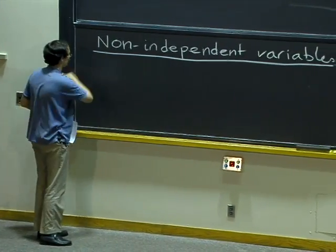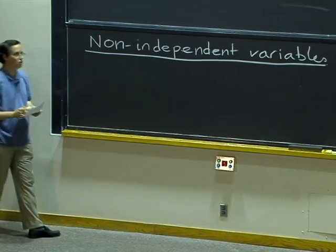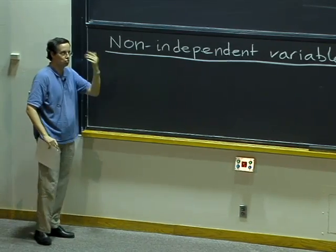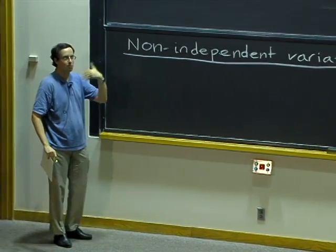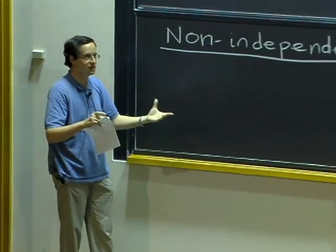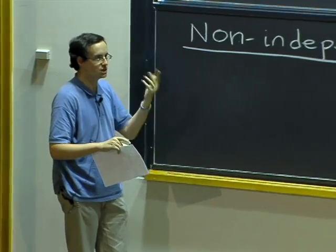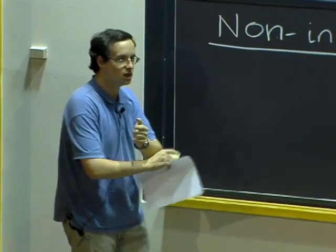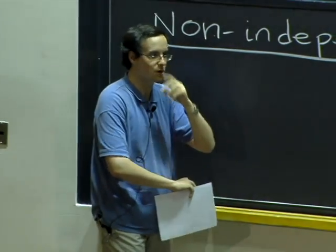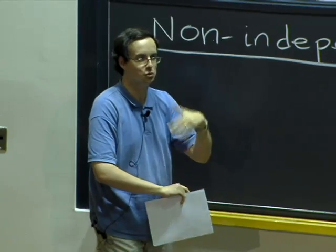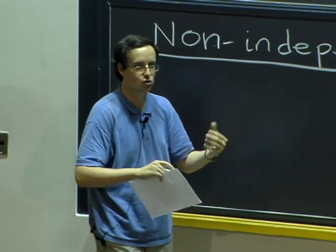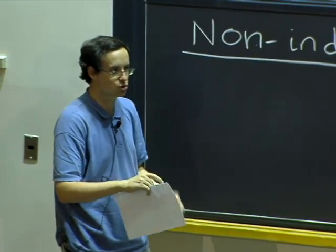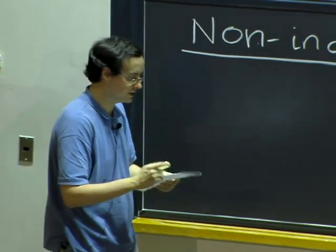So last time we saw how to use Lagrange multipliers to find the minimum or maximum of a function of several variables when the variables are not independent. And today we are going to try to figure out more about relations between variables and how to handle functions that depend on several variables when they are related.